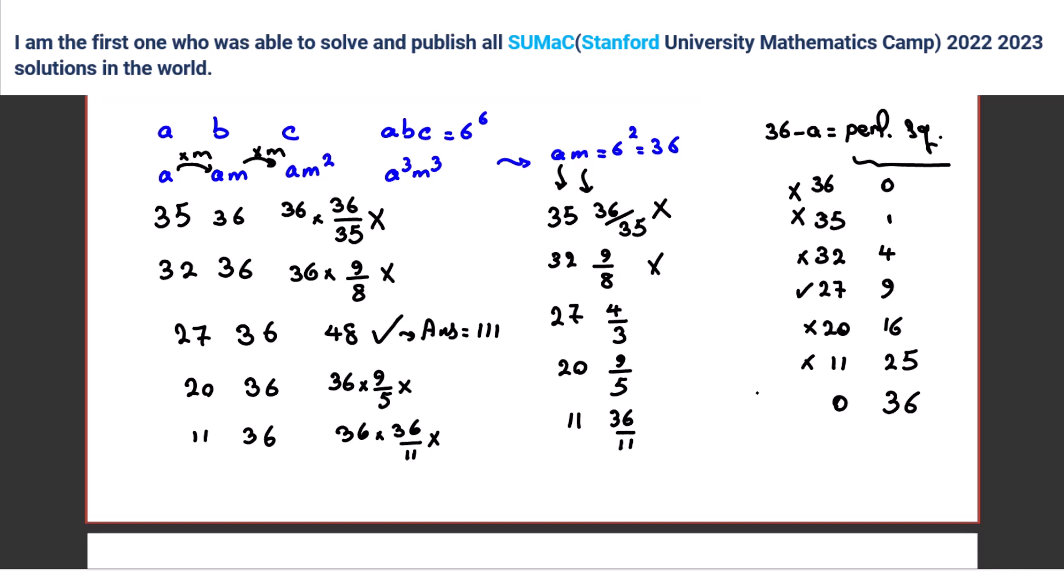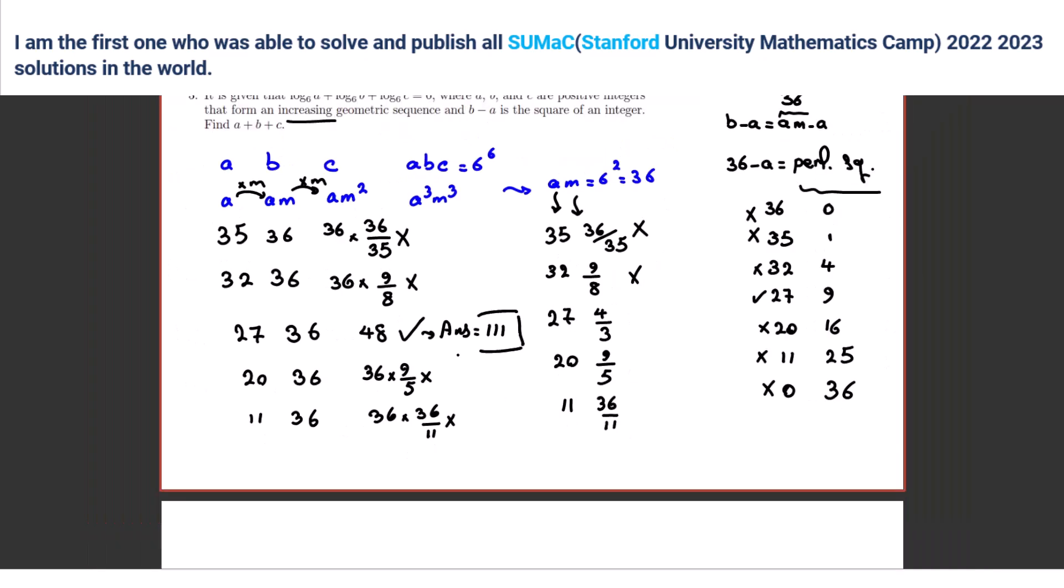36 over 11 so it's 11 36 it's 36 times 36 over 11 which is not integer and last one zero do you agree if a is a zero is not possible right yeah because zero times m is zero not 36 okay so the answer is 100 and 11 okay yes any question about this problem